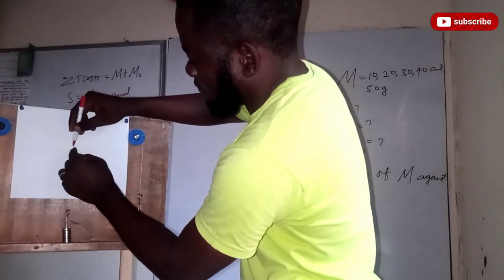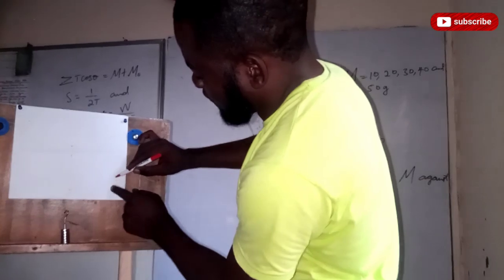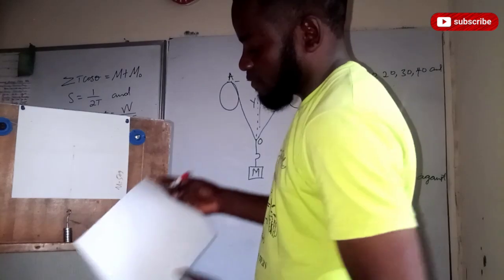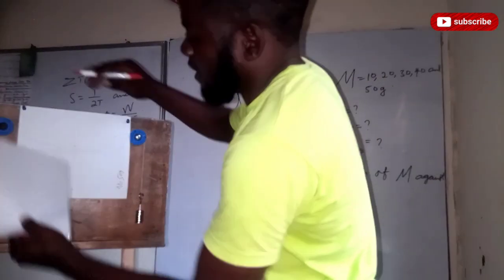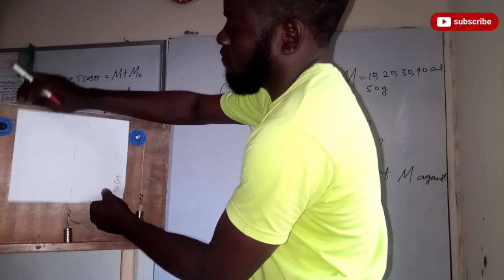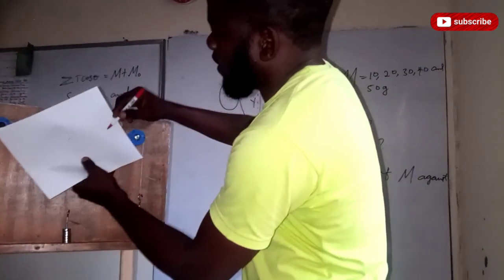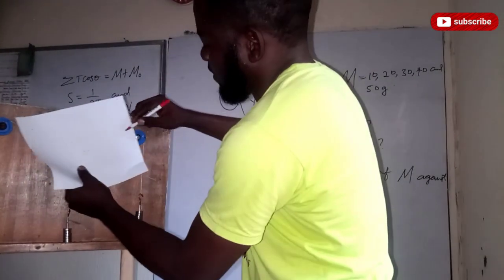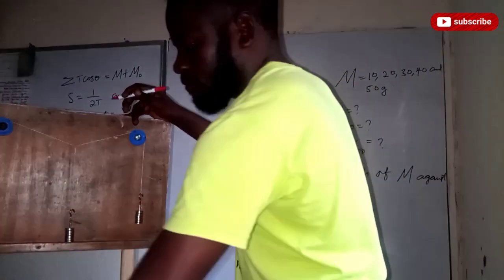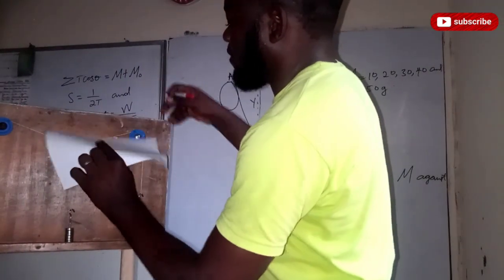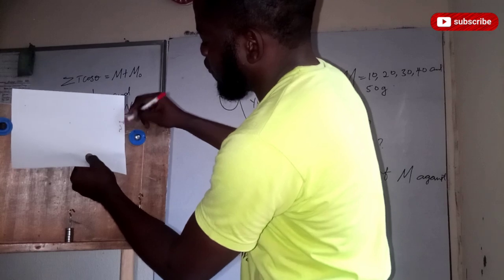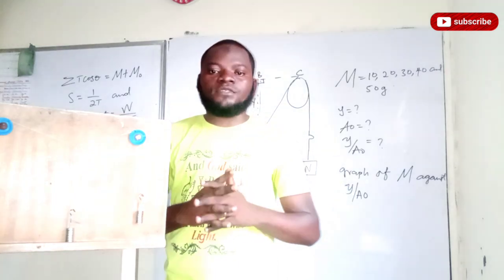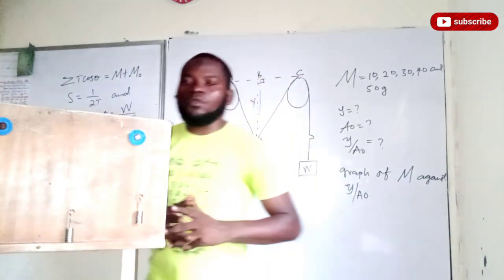I take my point. This is when M is 50 grams. This is when M is 40 grams. This is when M is 30 grams. Here is when M is 20 grams. We have that of 10 grams also. The next thing now is to connect all these points together and see how we go about that.